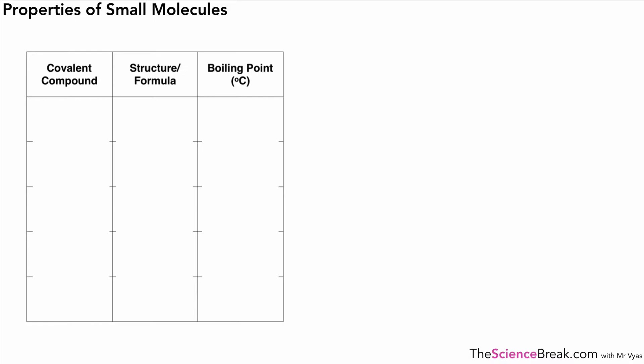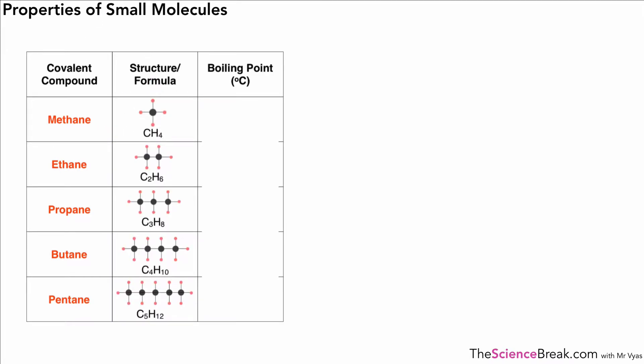Now there's one more detail we need to know about as well. If we take a series of covalent compounds that increase in size, so here we've got methane, ethane, propane, butane, and pentane. Here are the structural formulas of those, of each of those. So as you can see, the molecules get bigger as we go down. And also remember the atoms in the molecules are held together by covalent bonds.